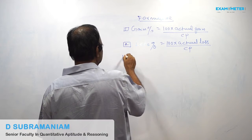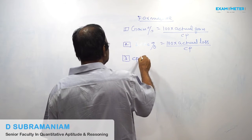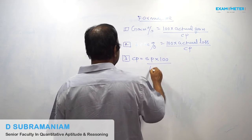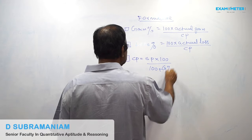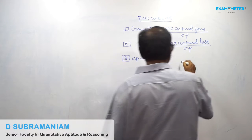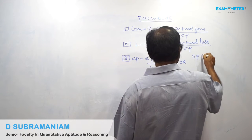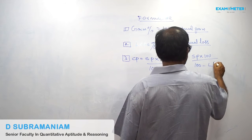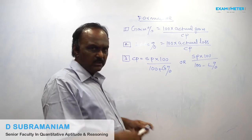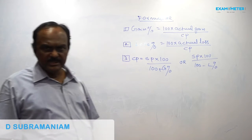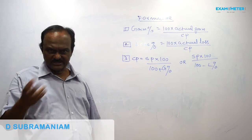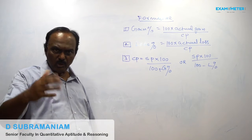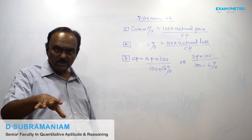Third Formula: Cost Price is equal to Selling Price multiplied by 100, divided by (100 plus Gain Percent) or (100 minus Loss Percent). If it is a gain, you add; if it is a loss, you subtract.